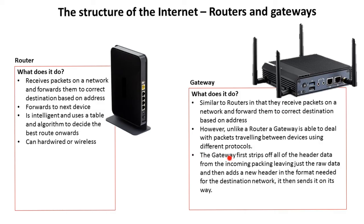What the gateway does is first strip off all the header information from the incoming packet, leaving just the raw data. It then recreates the header in the format needed for the new destination network and the new protocol, and then it sends it on its way.